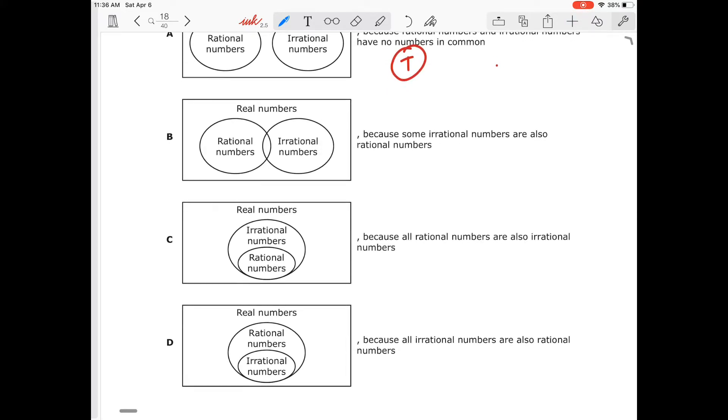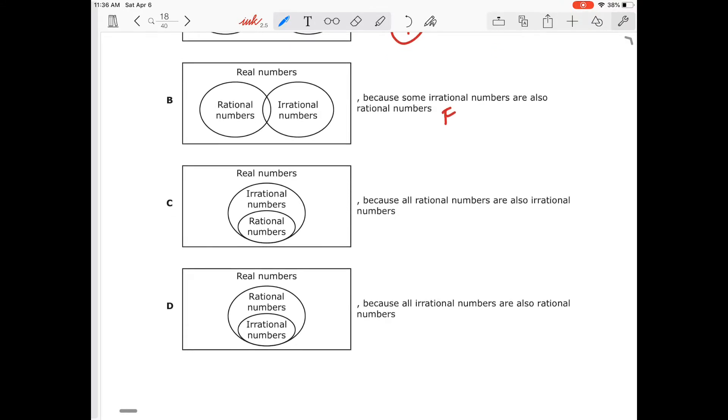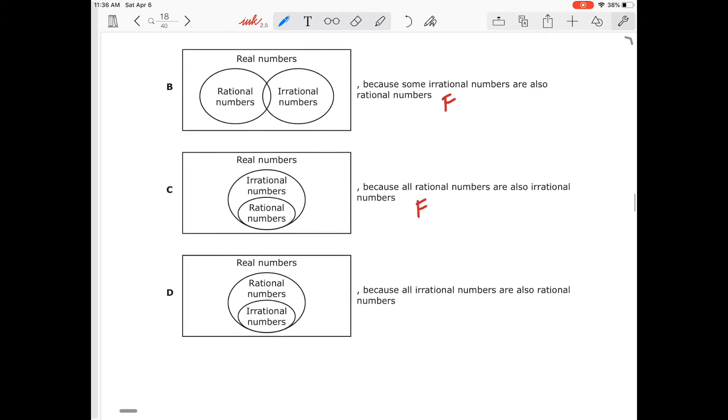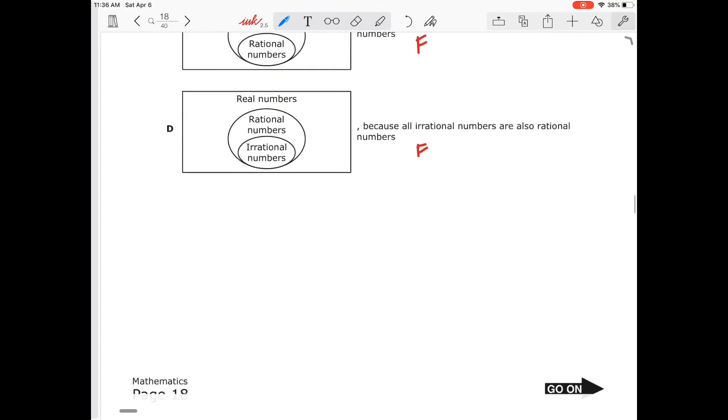B, it says because irrational numbers are also rational. That is false. Irrational numbers and rational numbers. All rational numbers are irrational. No, that again is false. All of these are false. So my only answer choice is A.